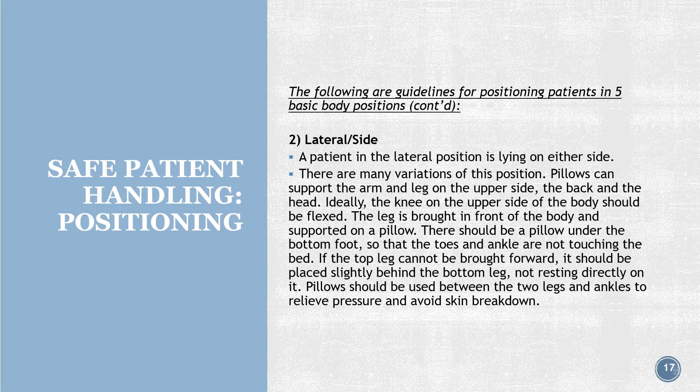Position 2 — Lateral (side): a patient in the lateral position is lying on either side; there are many variations. Pillows can support the arm and leg on the upper side, the back, and the head. Ideally, the knee on the upper side should be flexed, with the leg brought in front of the body and supported on a pillow. There should be a pillow under the bottom foot so that the toes and ankle are not touching the bed. If the top leg cannot be brought forward, it should be placed slightly behind the bottom leg — not resting directly on it. Pillows should be used between the two legs and ankles to relieve pressure and avoid skin breakdown.